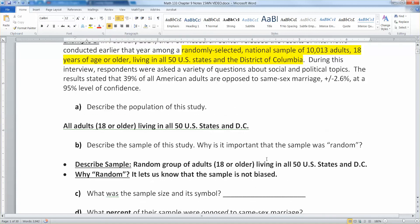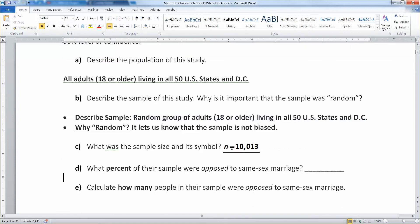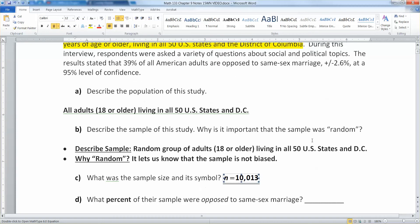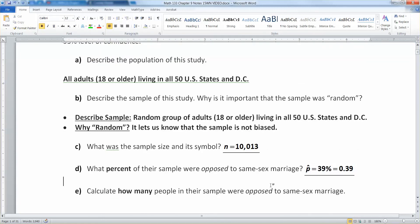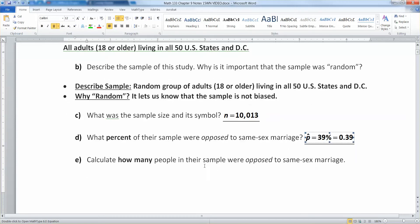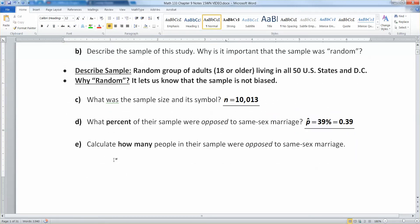Now your sample size was 10,013. What gets students confused sometimes is they'll think 10,013 is the sample, and it's just the sample size. The sample itself is this group of people that you want to describe. And then the symbol for sample size is n, little n, lowercase n. What percent of their sample was opposed to same-sex marriage? Well, it was right here. That's 39%. That's actually your statistic, right? It's p-hat. So let me type that in. And there we have it, 0.39, just 39%. Now this little bit is a calculation. So we need to calculate how many people in the sample were opposed to same-sex marriage.